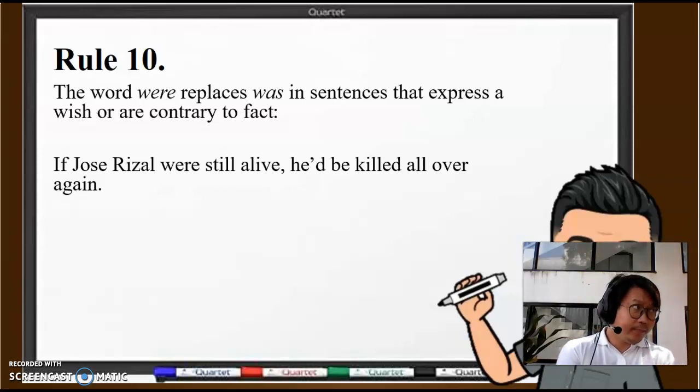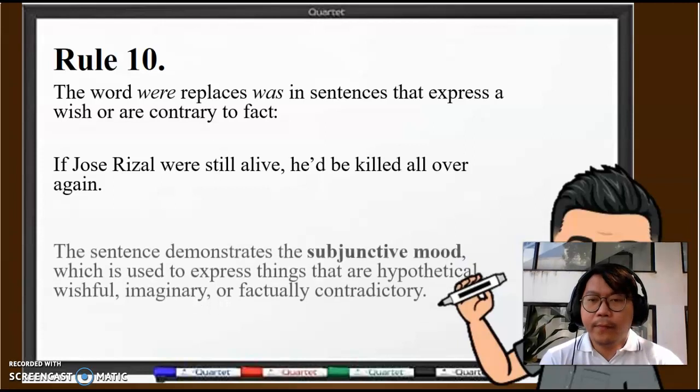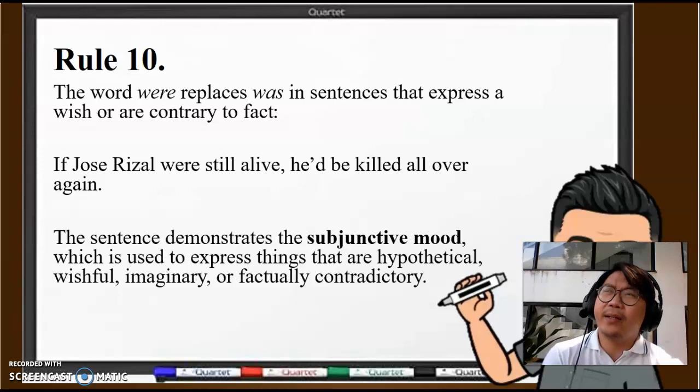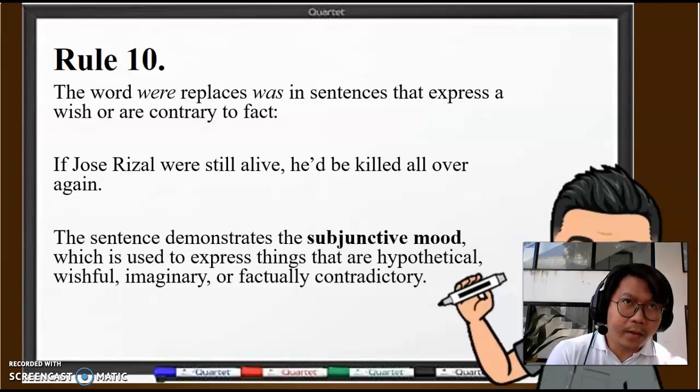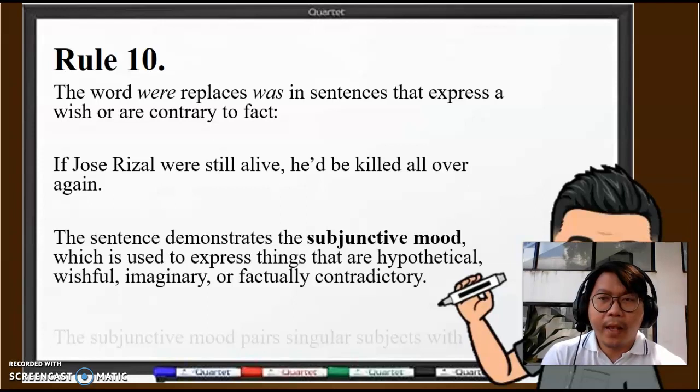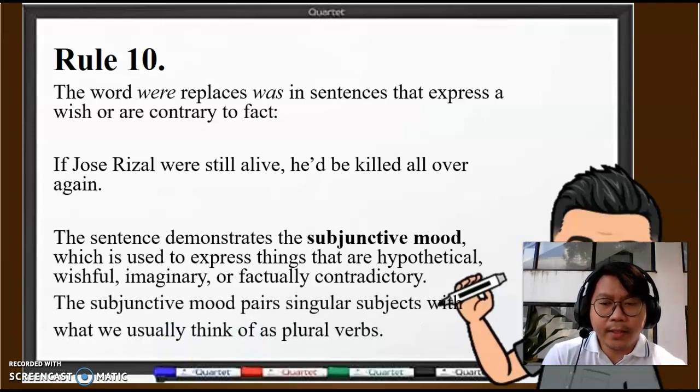Another example is "If I Were a Boy," the song by Beyoncé. In that particular song, it demonstrates the rule we're talking about. This is what we call the subjunctive mood, when we are expressing something that's hypothetical, wishful, imaginary, or contradictory. Another example: "If I were you, I would be very happy," sentences like that.